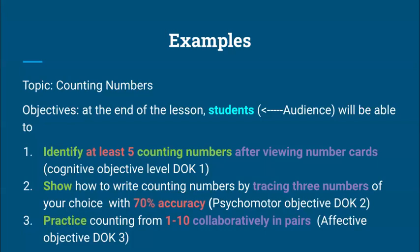How do you know that students have achieved 70% accuracy? You will have to design an instrument — for example, if they break away five times while tracing, that would give them 70% accuracy. Objective number three: practice counting from one to ten collaboratively in pairs. Since they're working together, this brings out the affective domain — they need to work together as a team. This is a DOK level three verb — the behavior is practice. The degree is from one to ten, so it's specific. For larger classes, maybe it could be from 20 to 50 or even to 100, but make sure it's specific.